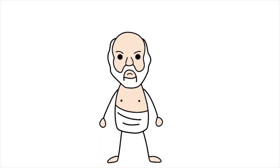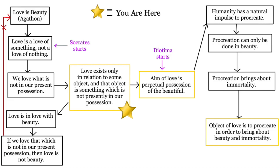So Socrates sums this all up by saying, quote, love exists only in relation to some object, and that that object must be something of which he is at present in want. Agathon agrees to all this.